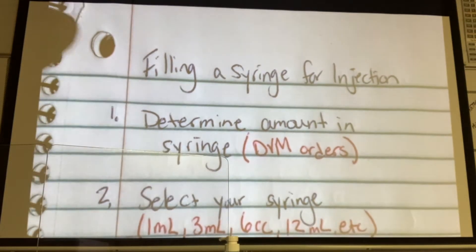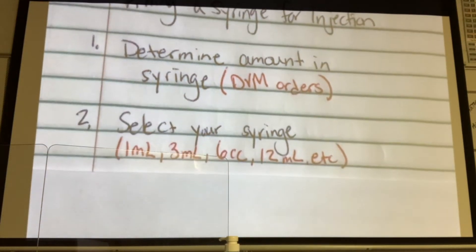So step two is the student selects the proper size syringe. The differences that you see in those syringes, right? So I can select that proper size. Common syringes you're going to have in a clinic are going to be your one mil, three mil, six mil, 12.